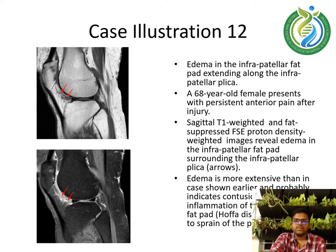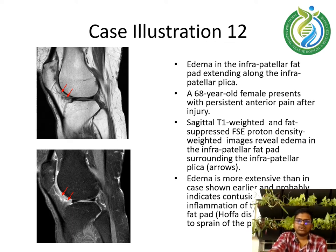Case illustration 12: a 68-year-old female presents with persistent anterior pain after injury, with edema in the infrapatellar fat pad extending along the infrapatellar plicae. Sagittal T1-weighted and fat-suppressed FSE proton density weighted images reveal edema in the infrapatellar fat pad surrounding the infrapatellar plicae shown by the arrows. This edema is more extensive than in the previous case and probably indicates contusion and inflammation of the infrapatellar fat pad in addition to strain of the plicae.